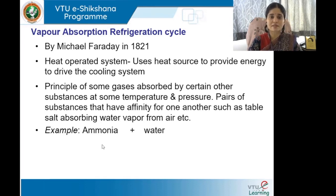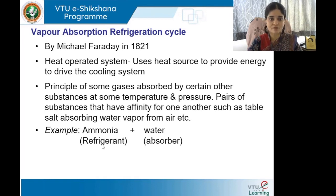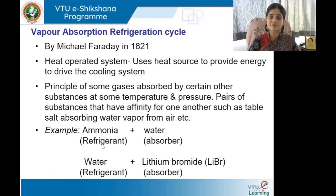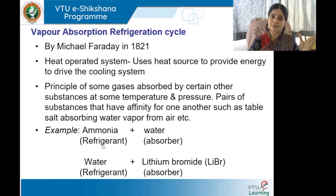Examples of such pairs include: ammonia and water, where ammonia is the refrigerant and water is the absorber; and water and lithium bromide, where water becomes the refrigerant and lithium bromide becomes the absorber. These pairs have natural affinity for one another, which is what this cycle exploits.